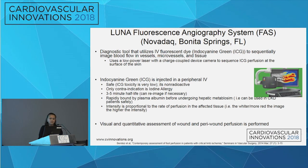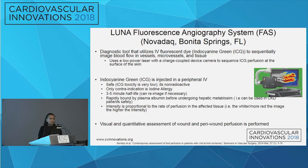The Luna Fluorescence Angiography system is a diagnostic tool that utilizes IV fluorescent dye called indocyanine green (ICG). It sequentially images blood flow in vessels and microvessels in tissue, using a low-power laser with a coupled-device camera to sequence ICG perfusion at the surface of the skin — measuring perfusion down to the skin level, not macrovessels. ICG is injected in a peripheral IV, is safe, non-radioactive, low toxicity, and the only contraindication is iodine allergy. It has a very short half-life, so you can re-image multiple times within minutes. It's rapidly bound by plasma albumin and undergoes hepatic metabolism, so it can be used safely in CKD patients. The intensity is proportional to the rate of perfusion — the brighter/more red the image, the higher the perfusion. You can do visual and quantitative assessment of wound and peri-wound perfusion.